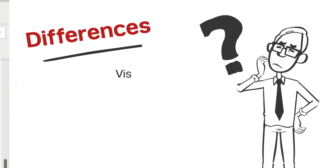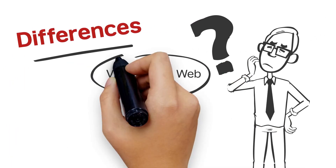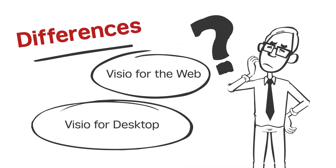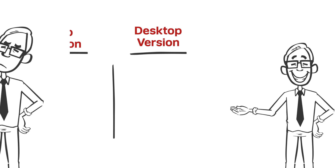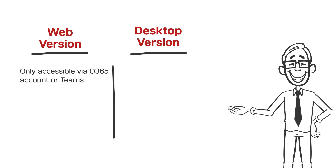Note that Visio for the web differs slightly from the desktop version. Visio in O365 is a web-only application and must be accessed either within Microsoft Teams or a web browser. Plus, an internet connection is required to view and edit these documents, although you can export Visio files as non-editable PDFs for offline use.